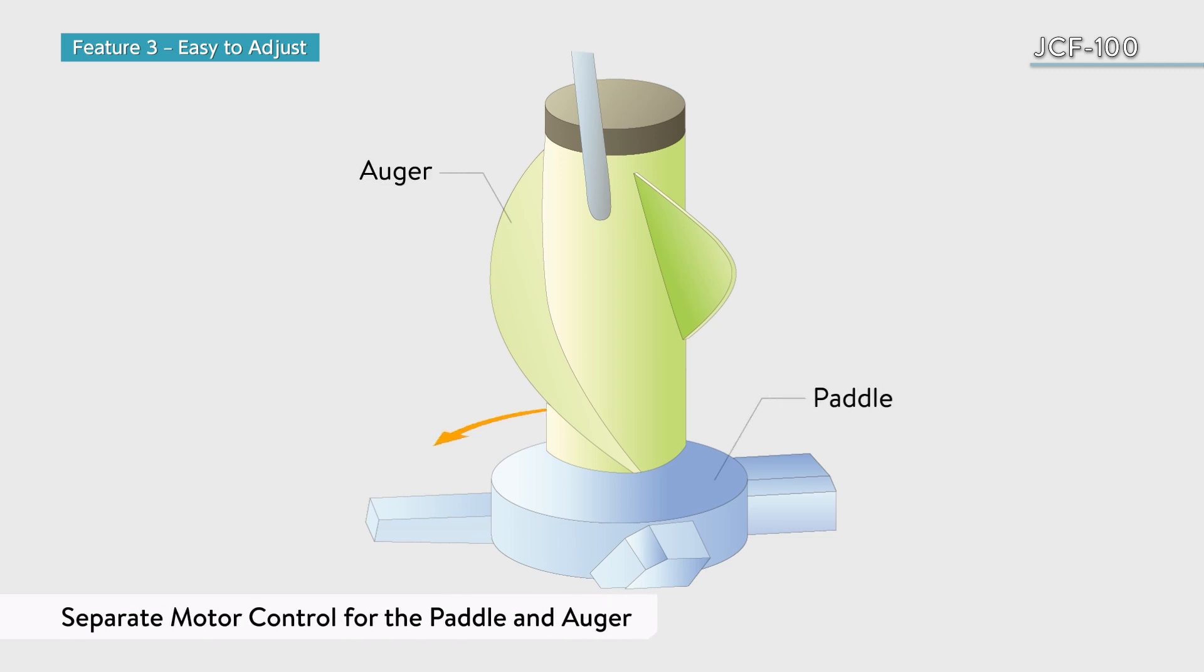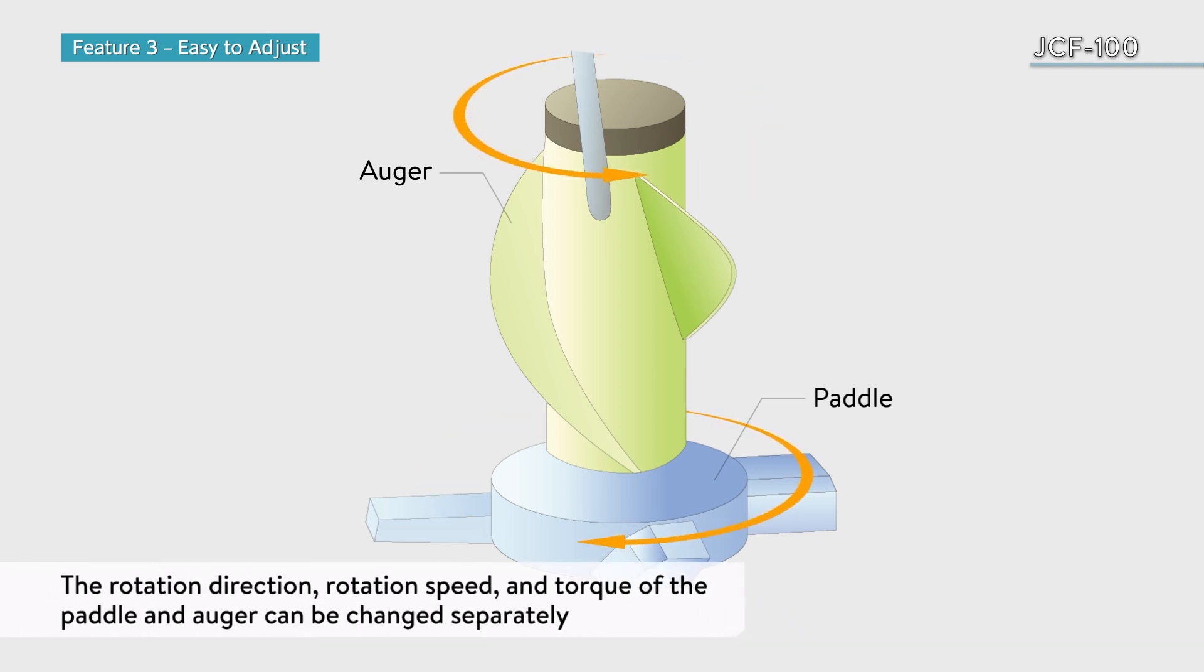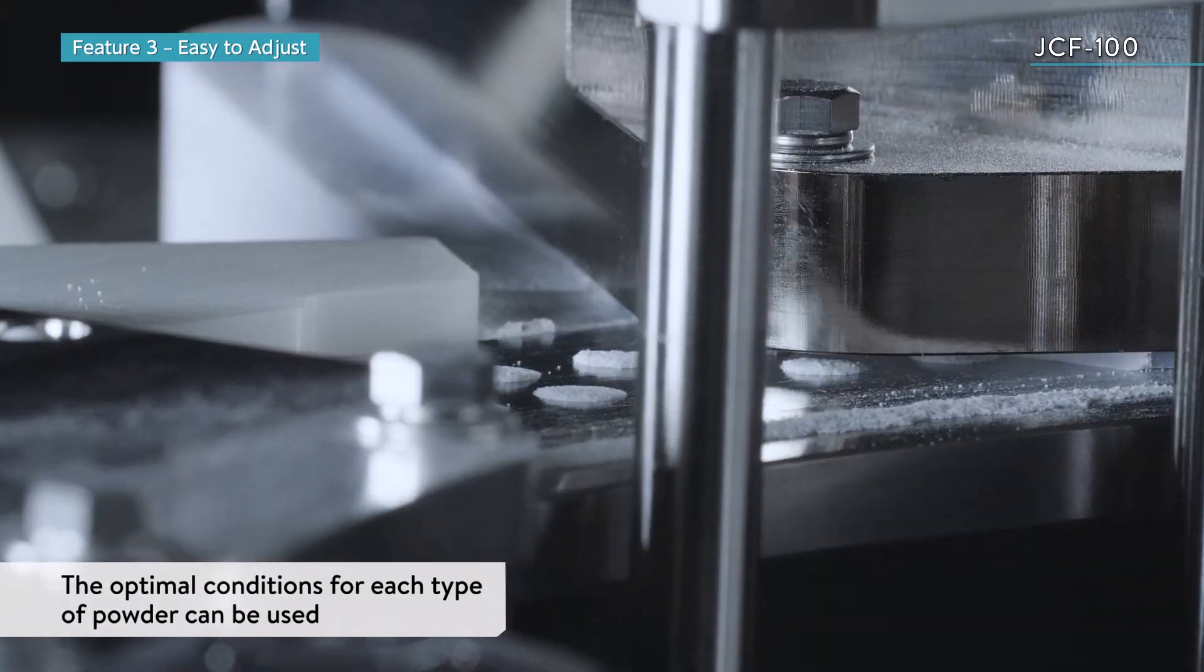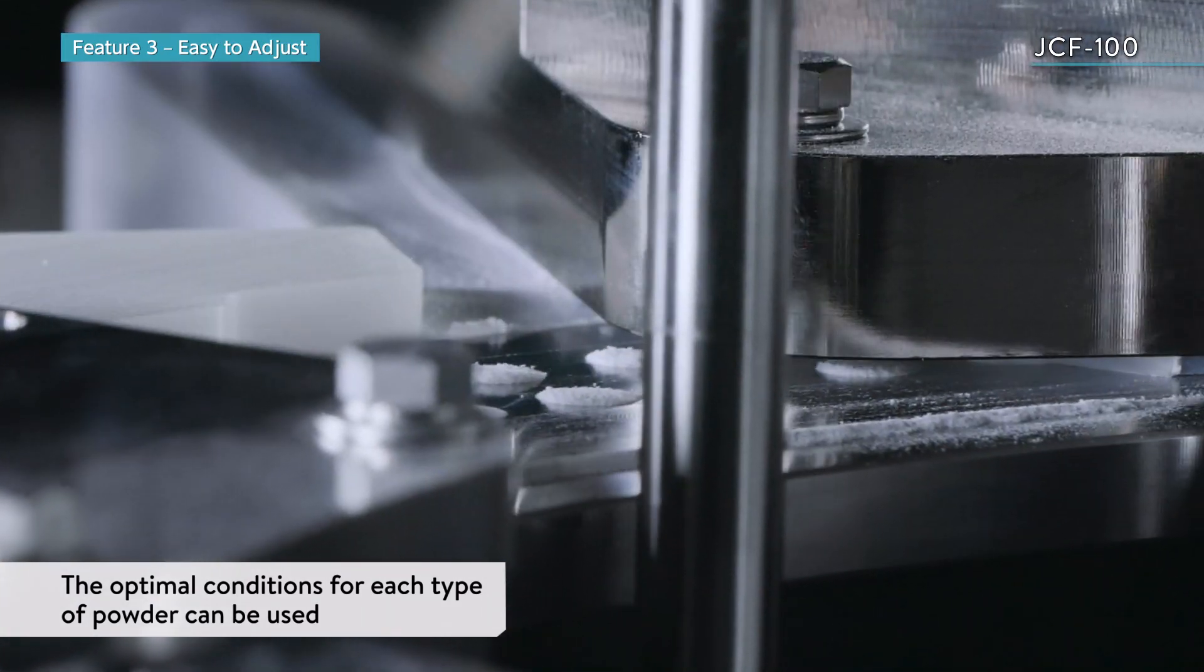In the filling area, the paddle and the auger are controlled by separate motors. Therefore, the rotation direction, rotation speed, and torque of the paddle and auger can be changed separately, making it possible to fill each type of powder under its optimal conditions.